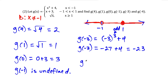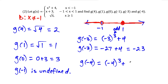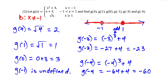For g of negative four: negative four is less than negative one, so it belongs in the top row. We can verify — negative four is not between negative one and one, and definitely not greater than or equal to positive one. So we plug in: negative four to the third power plus four. Four times four is 16, times four is 64, so we get negative 64 plus four, which simplifies to negative 60. That's the value for g of negative four.